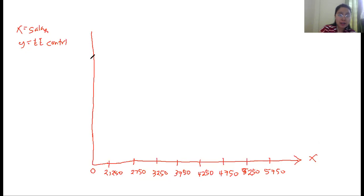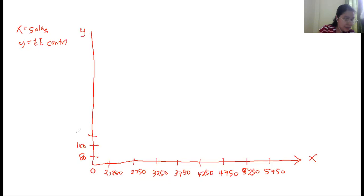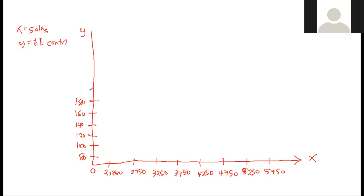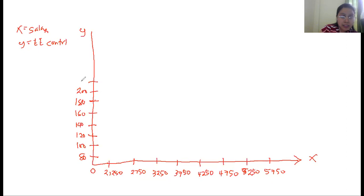On your y-axis, write the employee (EE) contribution values. Start with 80, then 100, then 120, then 140, then 160, then 180, then 200, then 220, then 240, and you can continue from there.